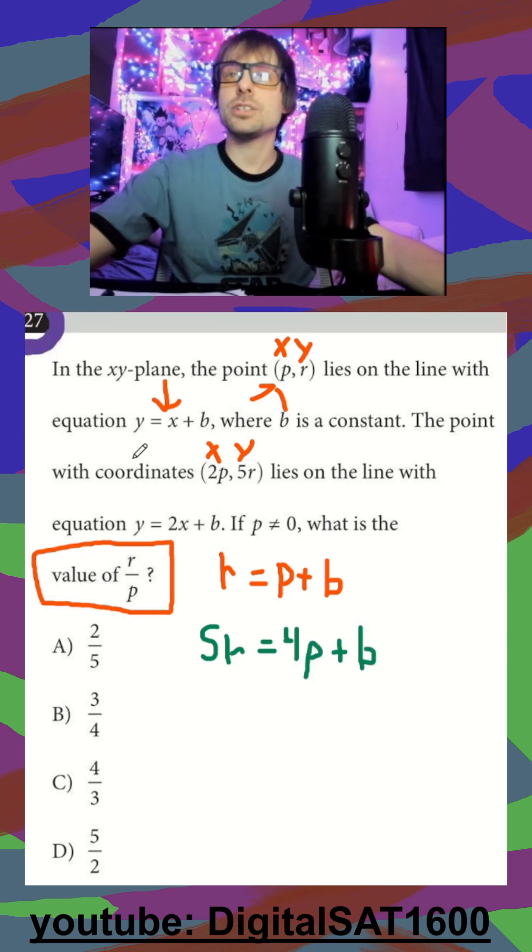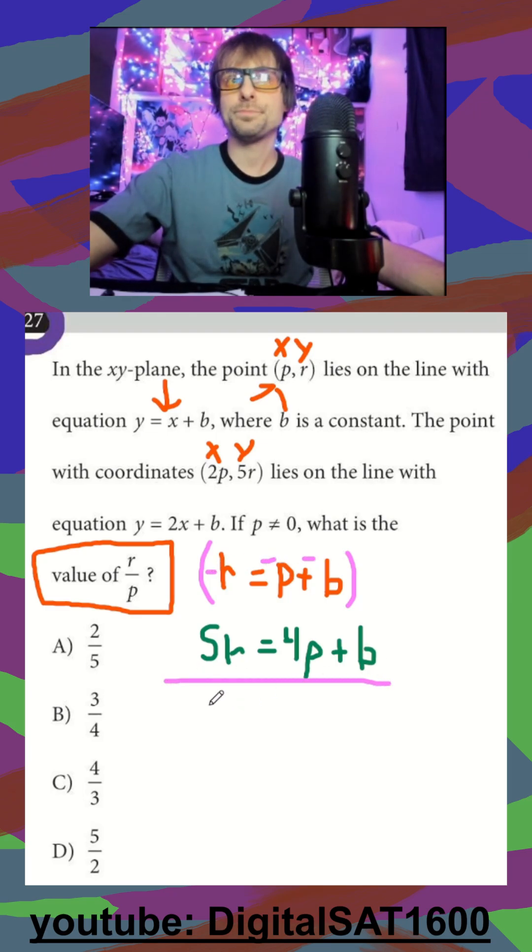And then there's multiple ways you can do this. I like doing elimination. Since b doesn't matter, we don't want it in our final equation. We could just multiply this entire equation by a negative. So negative r, negative p, negative b, and add them together. So that's going to get us 4r equals 3p. And then my b's cancel out. That was our goal.